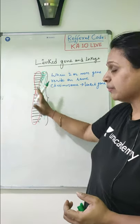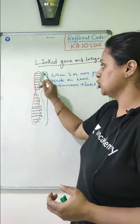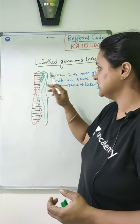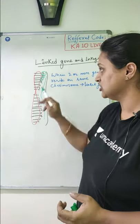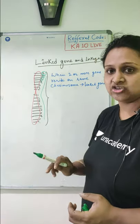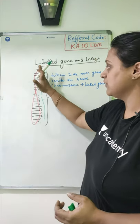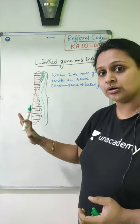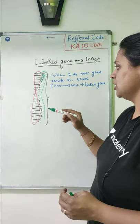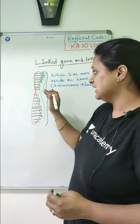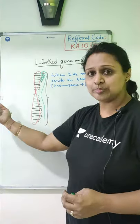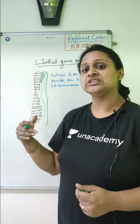So what do we call linked genes? A and B are linked genes, B and C are linked genes, A and C are linked genes, and A and D are also linked genes. Whatever genes are present on one particular chromosome are known as linked genes. So what is linkage? This linked gene inheritance pattern is called linkage.